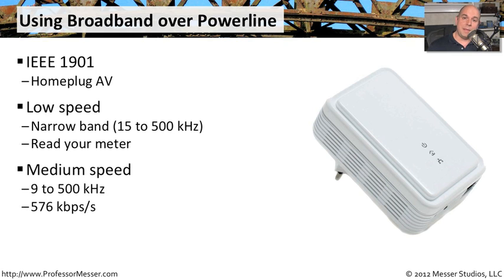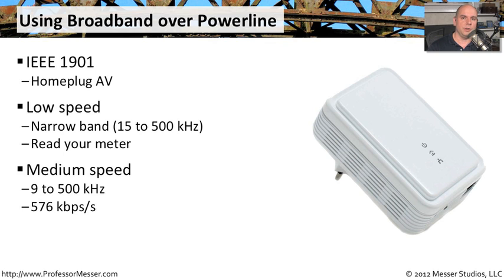Another type is a medium speed BPL, which goes anywhere from 9 to 500 kilohertz — again using those lower frequencies. The speeds of this are 576 kilobits per second. In some cases that's better than some people have with their DSL connection. As long as you don't have any problems with the power connections or any interference on that connection, you can probably send data over the internet and get a pretty good response time. There are other standards as well that can go up to very high frequencies over broadband over power line, depending on the type of implementation in your environment.